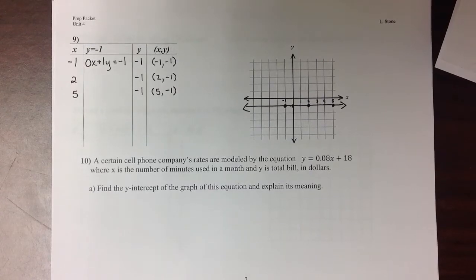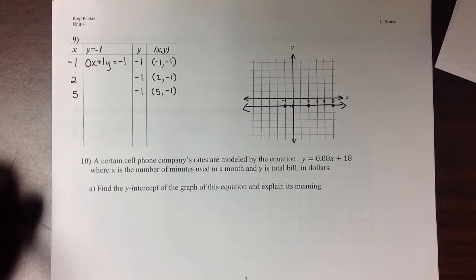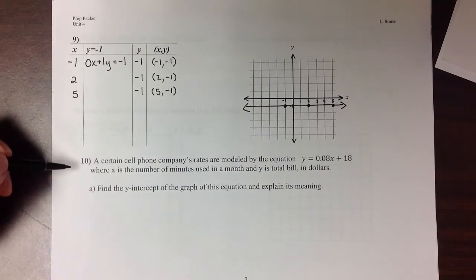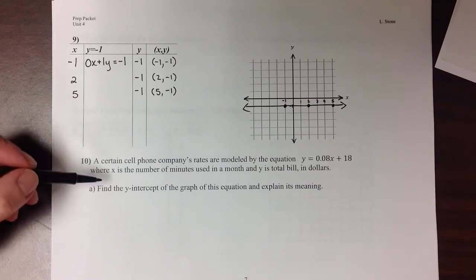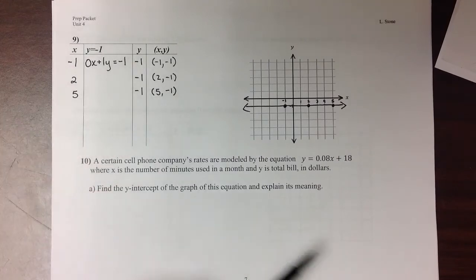Our final problem for this section is an application problem, looking at places where these linear relationships might actually occur. A certain cell phone company's rates are modeled by the equation y equals 0.08x plus 18, where x stands for the number of minutes that you use in a month, and y is the total bill in dollars.